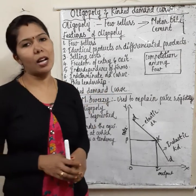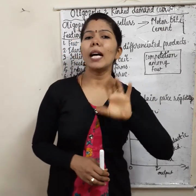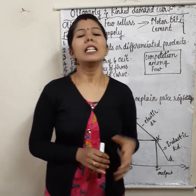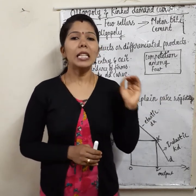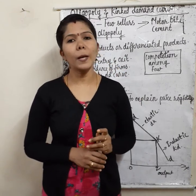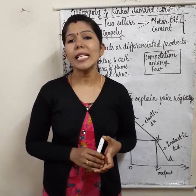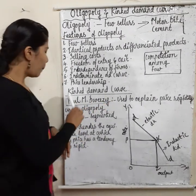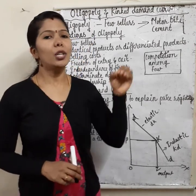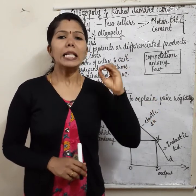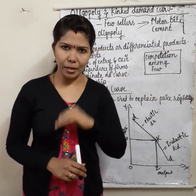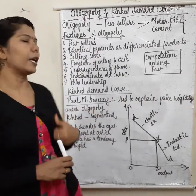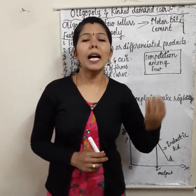Now we come to the kinked demand curve. Under oligopoly, the demand curve will be kinked. 'Kinked' means segmented — the demand curve has two segments. The concept of the kinked demand curve was suggested by Paul M. Sweezy. The kinked demand curve is used to explain price rigidity under oligopoly — that is, the tendency of price to remain rigid.